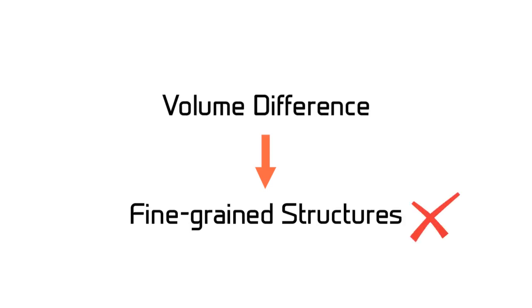Some other works utilize the volume difference between the shape and its convex hull as the concavity metric. However, they fail to handle fine-grained structures where the volume difference is small, but shape boundaries can be quite different.